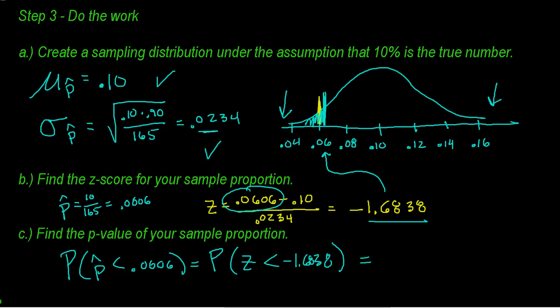That is equivalent to finding the probability that a z-score is less than negative 1.6838. You're going to go on your calculator to normal CDF. Start at negative 99 because we want to look lower, and stop at an upper value of negative 1.6838. That gives us a p-value of 0.0461.